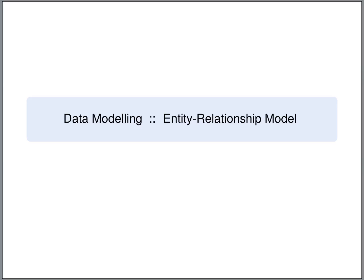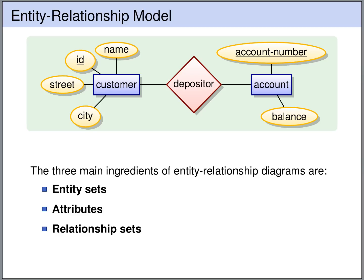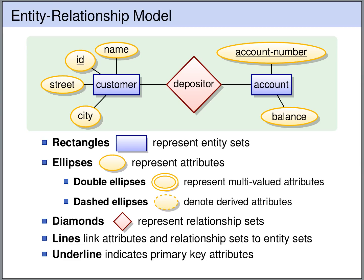In this course our main tool for the conceptual design will be the Entity Relationship Model. Entity Relationship diagrams have three main ingredients: entity sets, relationship sets, and attributes. Rectangles represent entity sets. Here we have an entity set customer and an entity set account. Diamonds represent relationship sets. In this example we have a relationship set depositor. The relationship sets are linked using lines to entity sets. Attributes are linked using lines to the entity set they belong to. Later we will see that relationship sets can also have attributes.